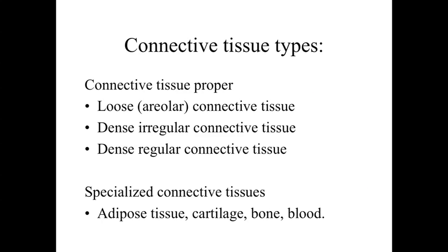Now if we take a look at the connective tissue types, we're going to focus on just a subset at this point. The overall characteristic is that they have cells scattered away from one another with material between them. We're going to look at three connective tissue propers: loose connective tissue, dense irregular connective tissue, and dense regular connective tissue, as well as some specialized connective tissues. We'll focus today on adipose tissue, and in upcoming lectures we'll take a look at cartilage, bone, and blood.